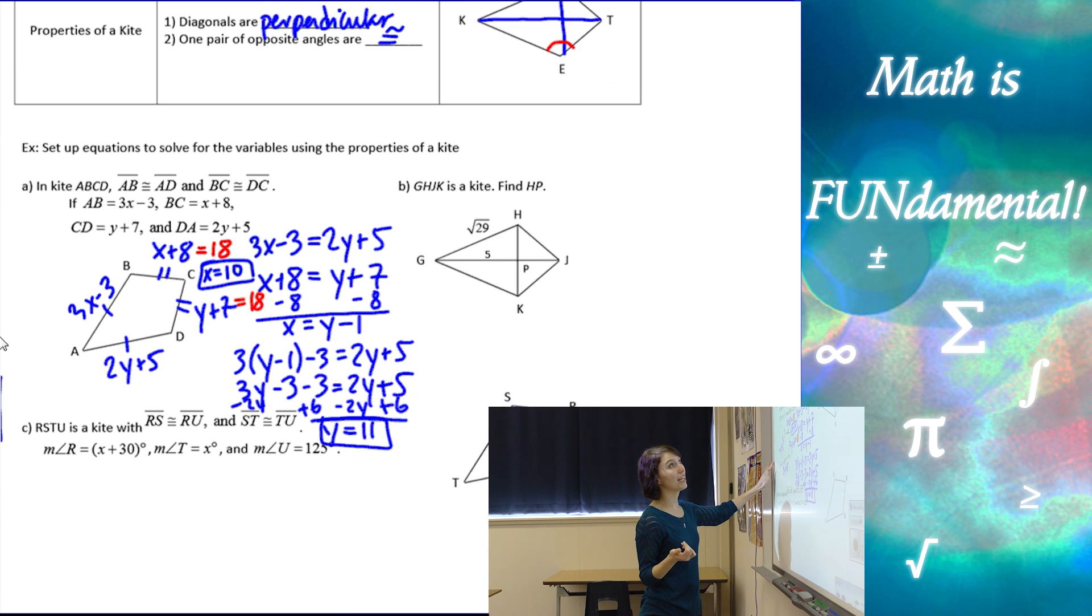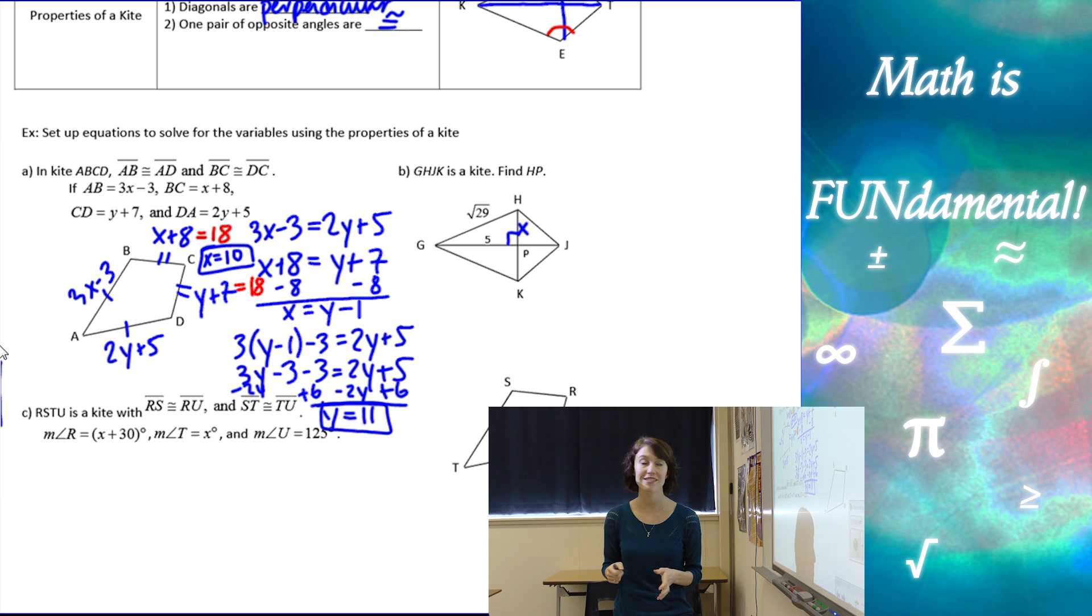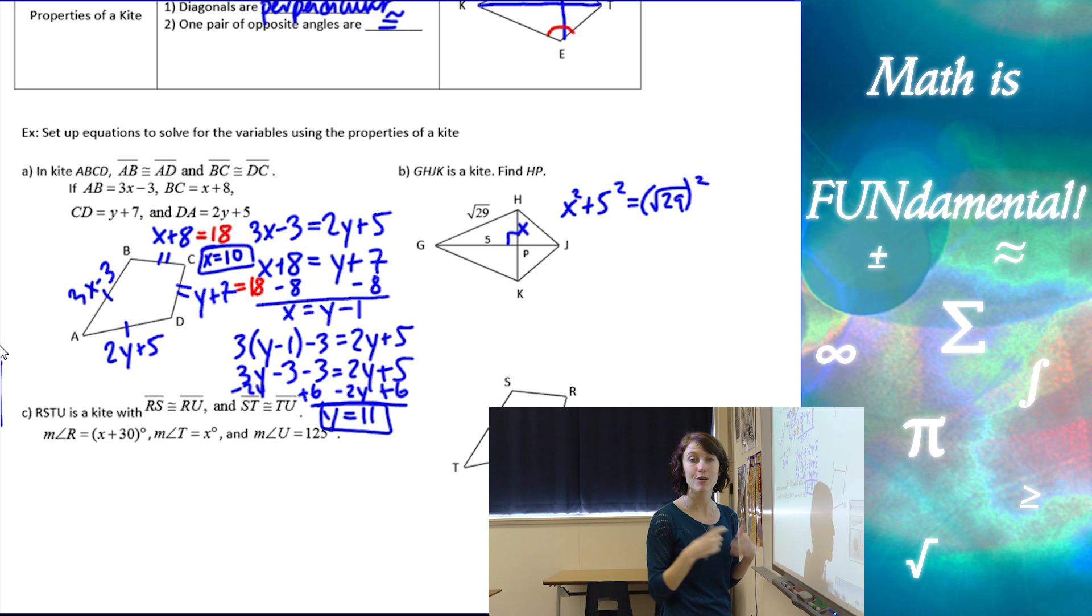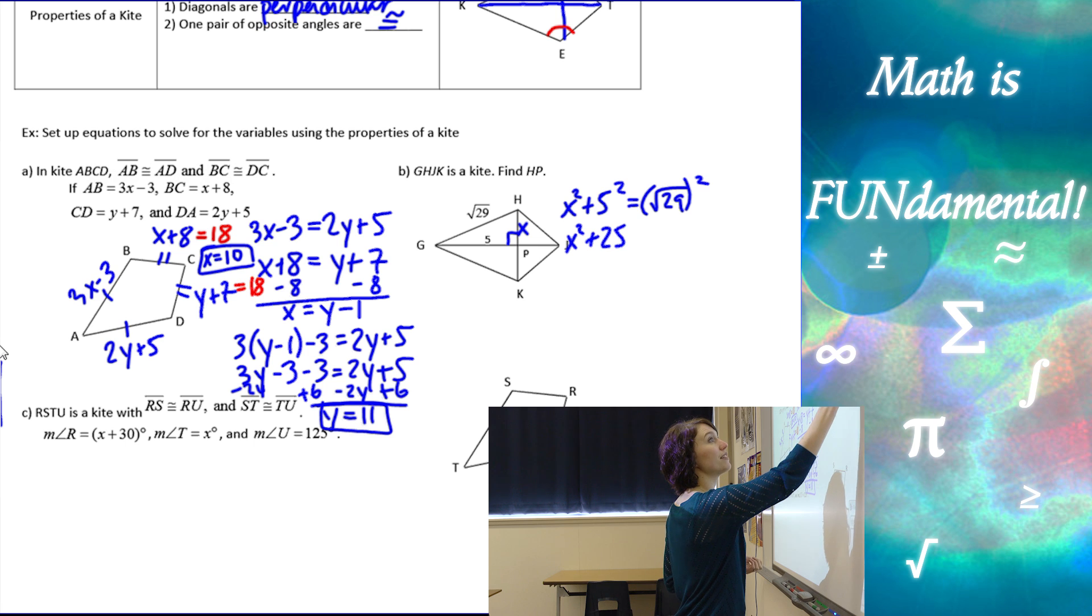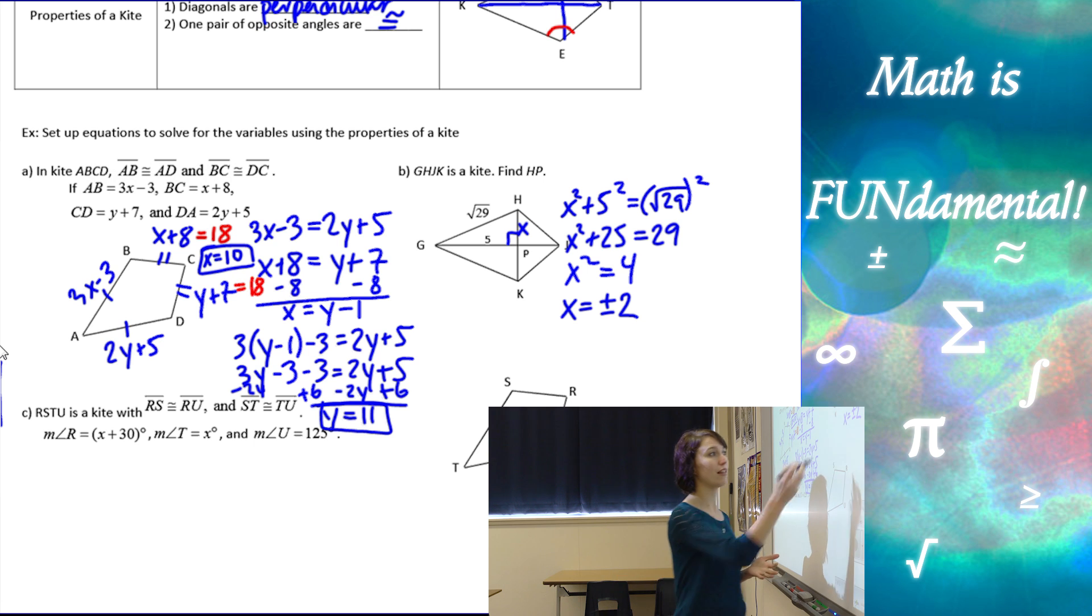Let's look at b. We have a kite, and we know that in a kite, the diagonals are perpendicular to each other. I need to find hp, so I'm going to put an x there, and if you notice, I've made myself a nice little right triangle. So, I can use Pythagorean theorem and set up x squared plus 5 squared equals the square root of 29 squared, and when we square a square root, the square root disappears. So, we've got x squared plus 25 equals 29, x squared equals 4. Now, when I take the square root to solve, x is going to be plus or minus 2, because positive 2 squared is 4, but so is negative 2 squared. Remember, in geometry, we can't have any negative lengths, and if we look at x, and I use negative 2, now I'm left with a negative length. So, my only answer here should be our positive 2.